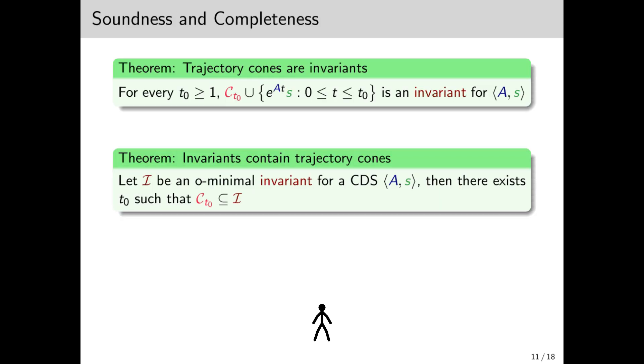We're now ready for the main characterization theorems. You can think of them as soundness and completeness results. For soundness, we show that for every t₀, if we take C_{t₀} and add to it the remaining tail, then this is an invariant for the CDS. This is actually pretty obvious, since this is kind of the reasoning behind the construction. The proof does require some effort, but not too much. For completeness, we show that every O-minimal invariant that contains the orbit must contain C_{t₀} for some t₀. This is the more difficult direction.